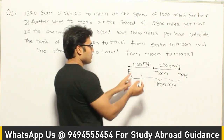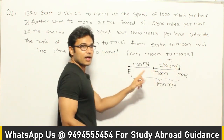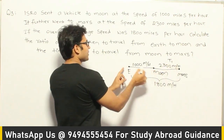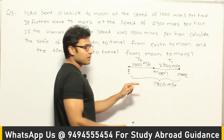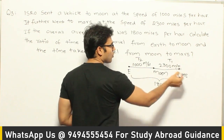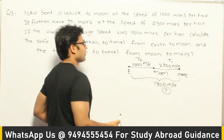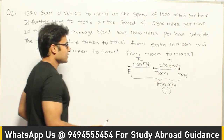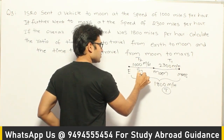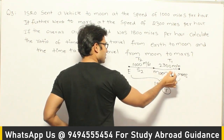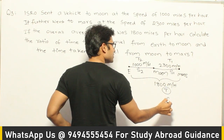Let us assume the time taken to travel from Moon to Mars is T1, and the time taken to travel from Earth to Moon is T2. The overall time is T. Also, the speed from Earth to Moon is S2, the speed from Moon to Mars is S1, and the overall speed is S.